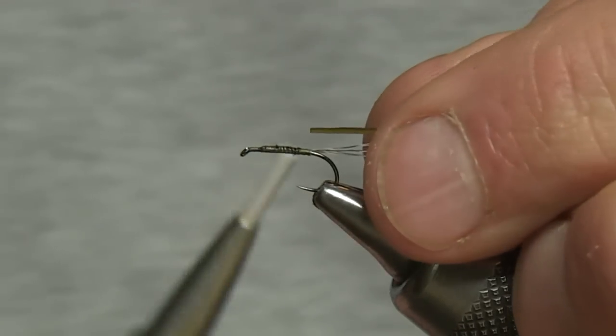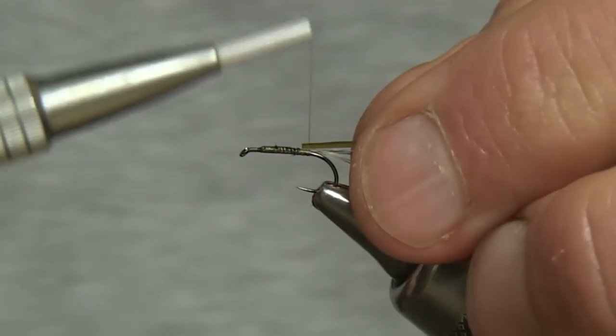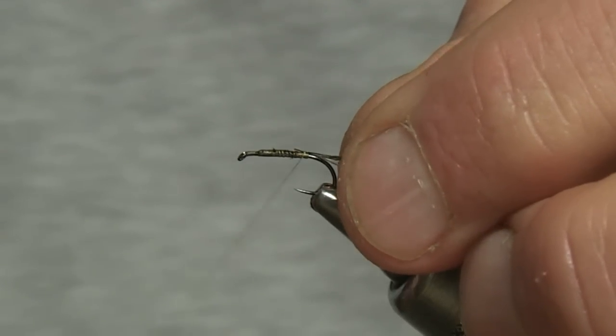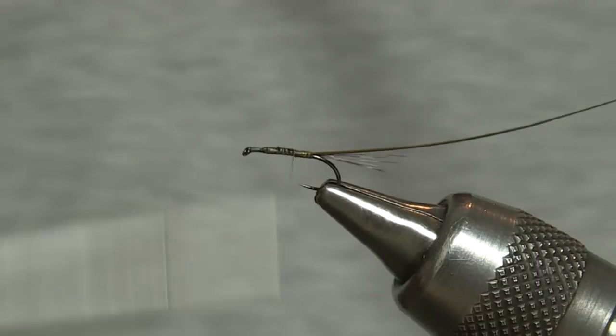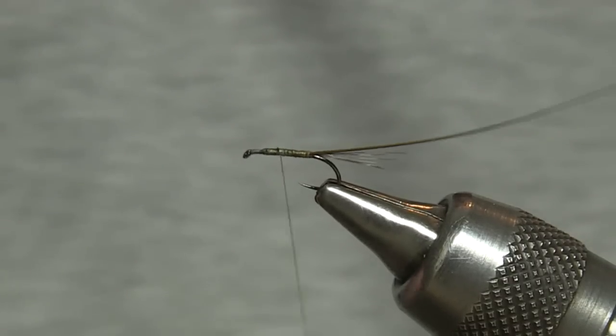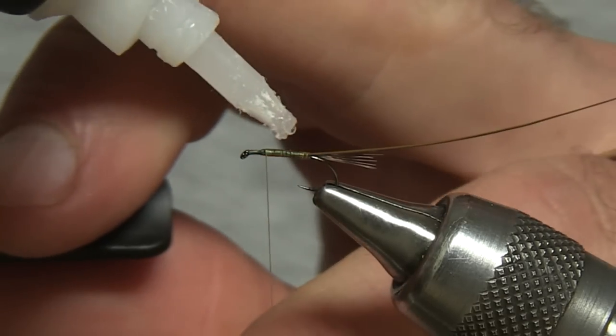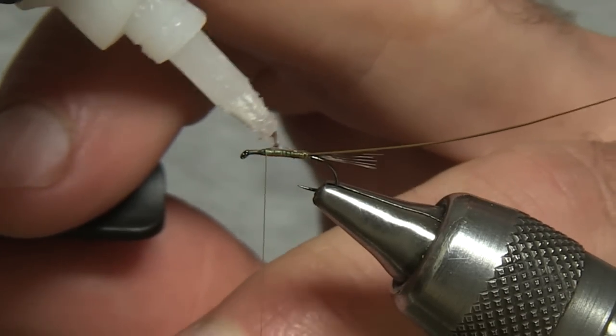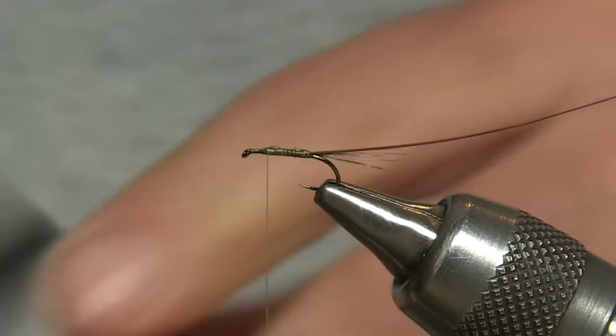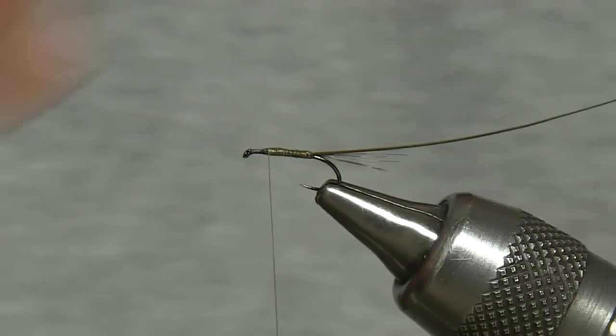Tie in the stripped quill which is going to form the body. Set that on top of the hook shank. Reposition your silk. One dab of super glue gel and take half of it off.